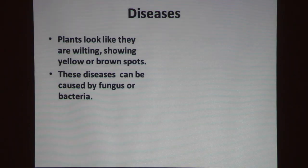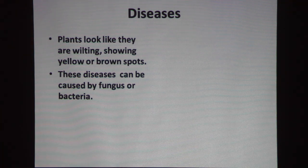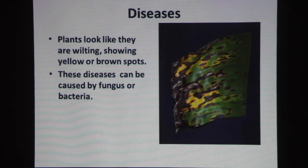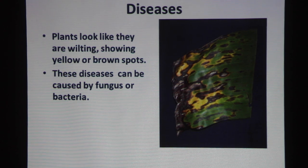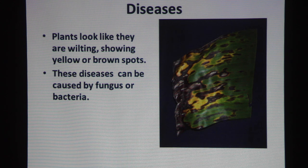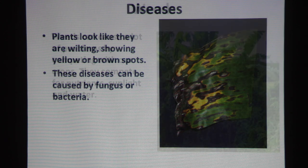Another thing is diseases. If plants have diseases, they look like they're wilting, showing sometimes yellow or brown spots. This may be caused by fungus or bacteria. This is a banana leaf showing a fungus — the fungus will spread and eventually the leaf will turn black and die. You can have diseases on tomatoes, eggplants, and any crops. Some varieties of tomatoes can be resistant.